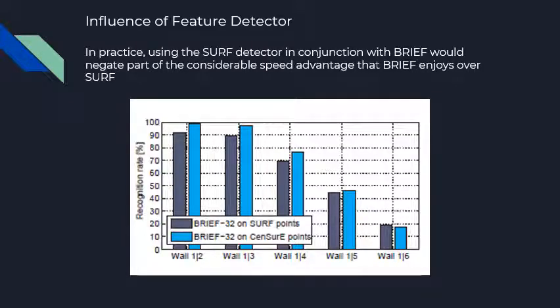What if we change the feature detector which detects the keypoints? After experimentation, the paper concluded that we should use CENSURE keypoints instead of SURF keypoints. The recognition rate shown in the graph has clearly increased.